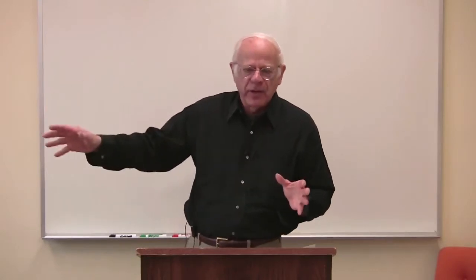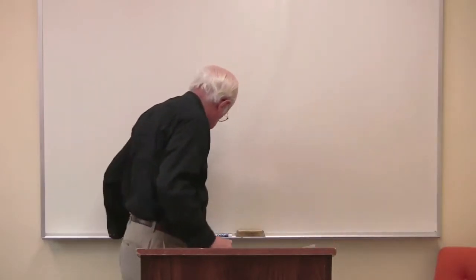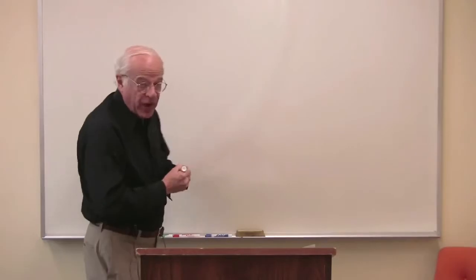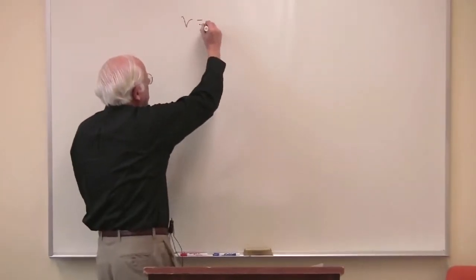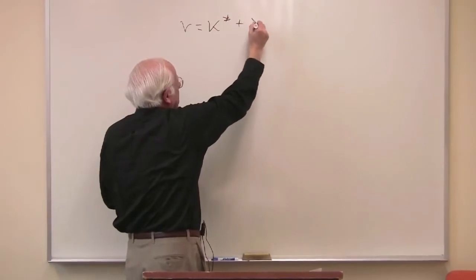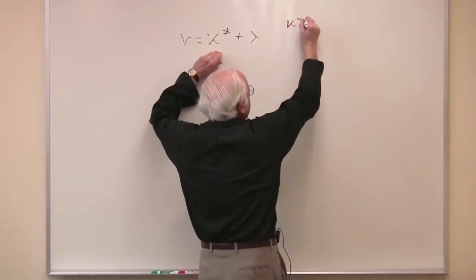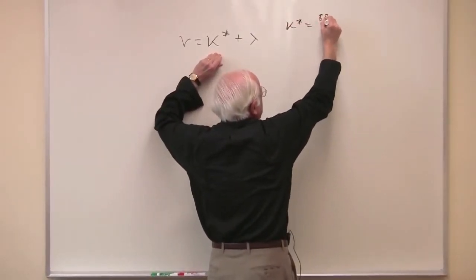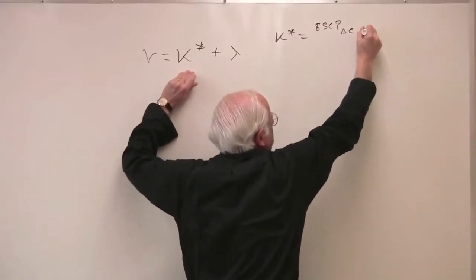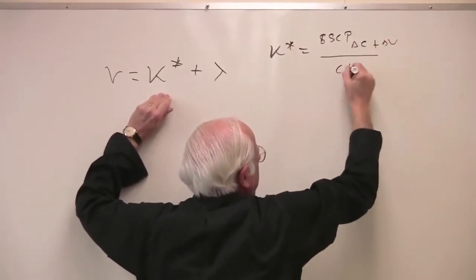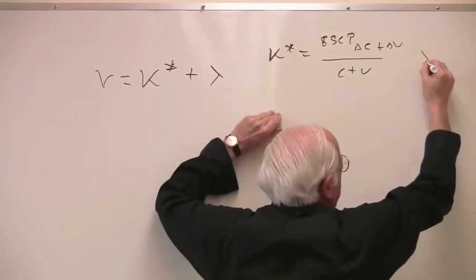If you recall from last time, we discussed how capitalist expansion can be characterized by an expansion of capital accumulation — that was K-star — plus all the other expansions that capitalist enterprises engage in, that was lambda. So the rate of profit is equal to K-star plus lambda. K-star is capital expansion: that's the subsumed class payment for delta C plus delta V divided by C plus V. And lambda is everything else.